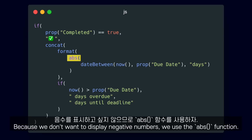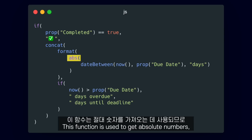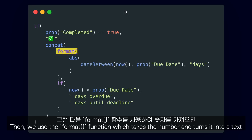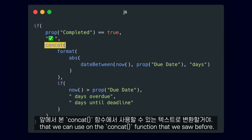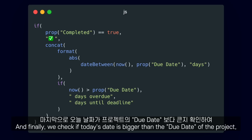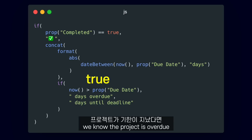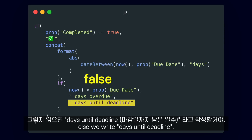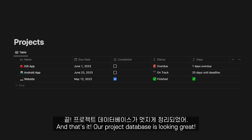Because we don't want to display negative numbers, we use the abs function. This function is used to get absolute numbers, which means that if we give this function minus one, it will return one. Then we use the format function, which takes the number and turns it into a text that we can use on the concat function we saw before. And finally, we check if today's date is bigger than the due date of the project — we know the project is overdue — and so we attach a 'days overdue' text, or else we write 'days until deadline'.